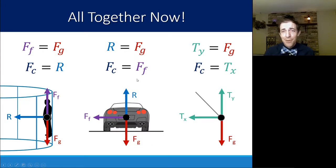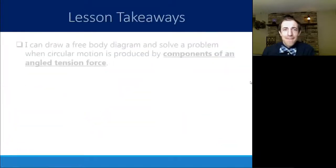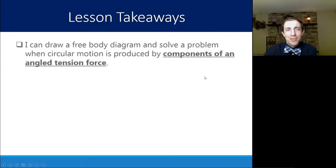These equations are not in your data booklet, nor should they be, because they are not universal equations. These are relationships based on the free body diagram. If you can draw this diagram for each of these scenarios, you should be able to easily see these examples and these equalities, and from there build off to solve the problem that you're looking at. So the takeaway for this lesson: you should be able to draw a free body diagram and solve a problem in circular motion that is produced by components of an angled tension force, like a circular pendulum.